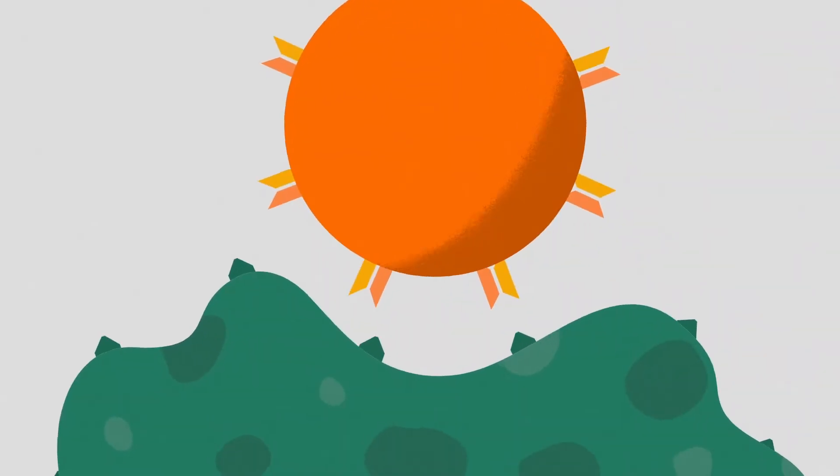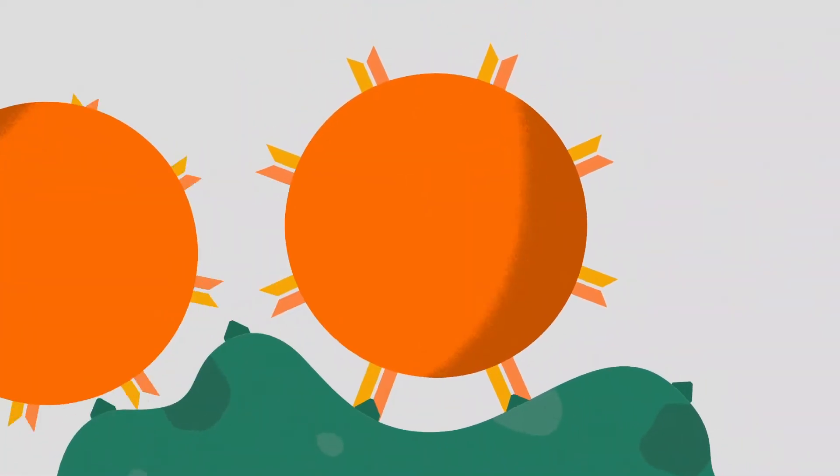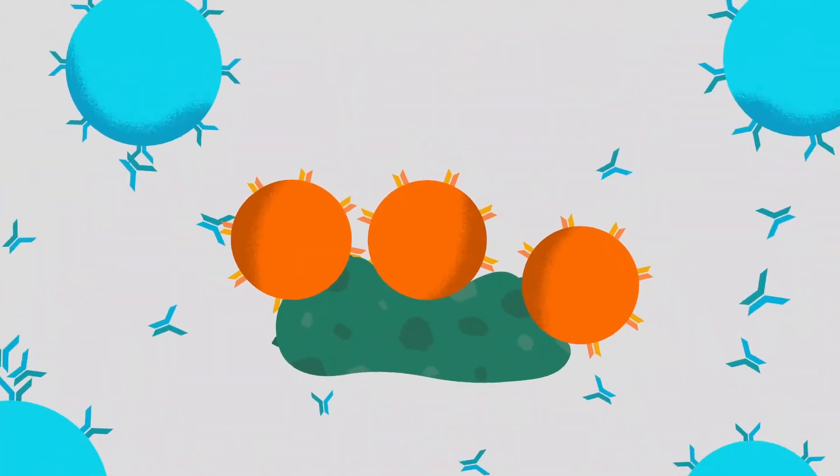When a T cell finds its target, it binds and then rapidly multiplies to allow for a powerful attack. It also directs the B cell to produce antibodies.